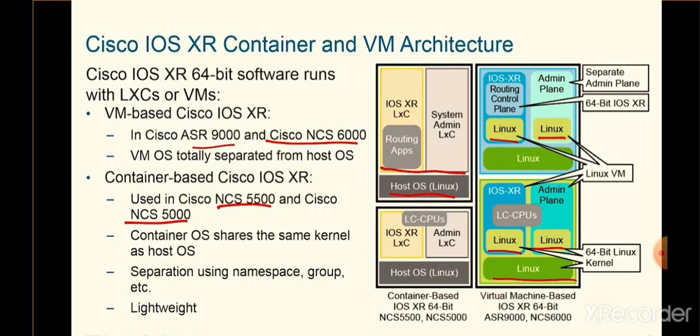With containers, we're able to reuse a lot of those same internal components — the same kernel, the same OS — and they use a lot of the same DLLs. Most importantly, because of the use of things like namespace and cgroups, we're able to keep them separate. One Linux container, unless we configure it explicitly to do so, cannot communicate with another container. They are separate, which also provides some security.